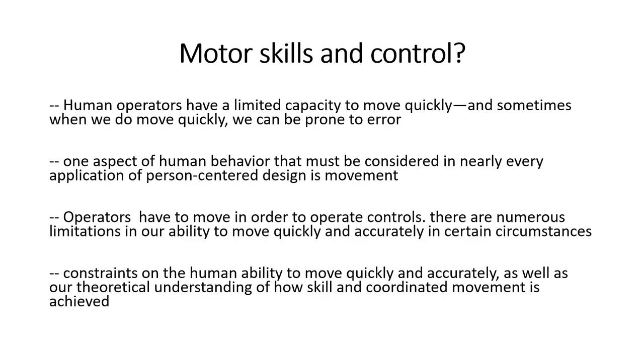Let us first start understanding what motor skills or movement-related skills are. Human operators have a limited capacity to move quickly, and sometimes when we do move quickly we can be prone to error — just like in the story of Manohar, who had to quickly move to press the emergency button so the crane would stand still and an accident could be prevented. If he presses the button too quickly, there are chances he will not be accurate in putting enough pressure on the control to stop the crane.